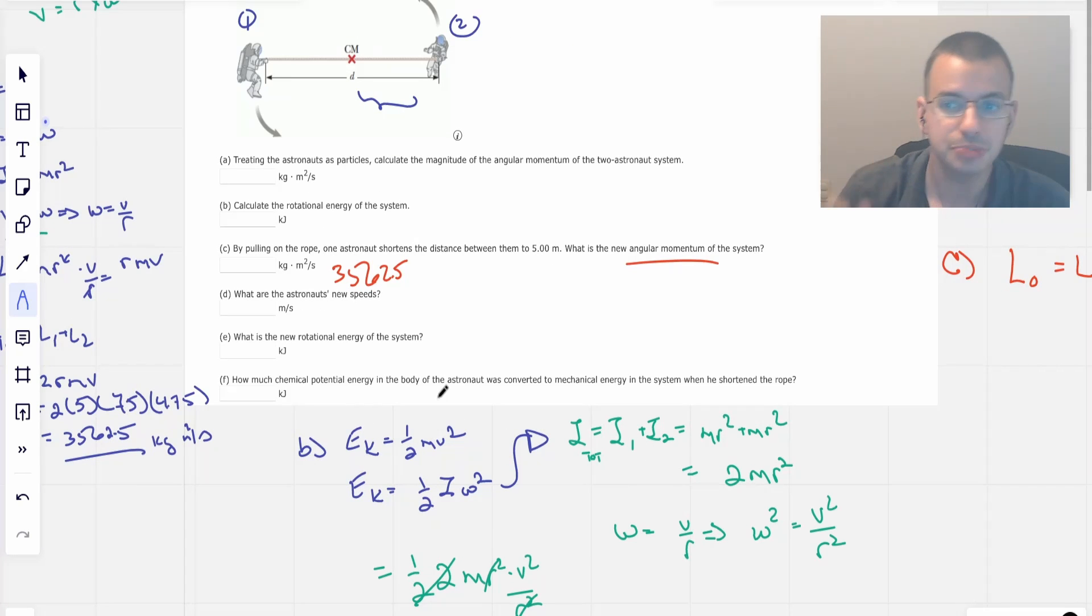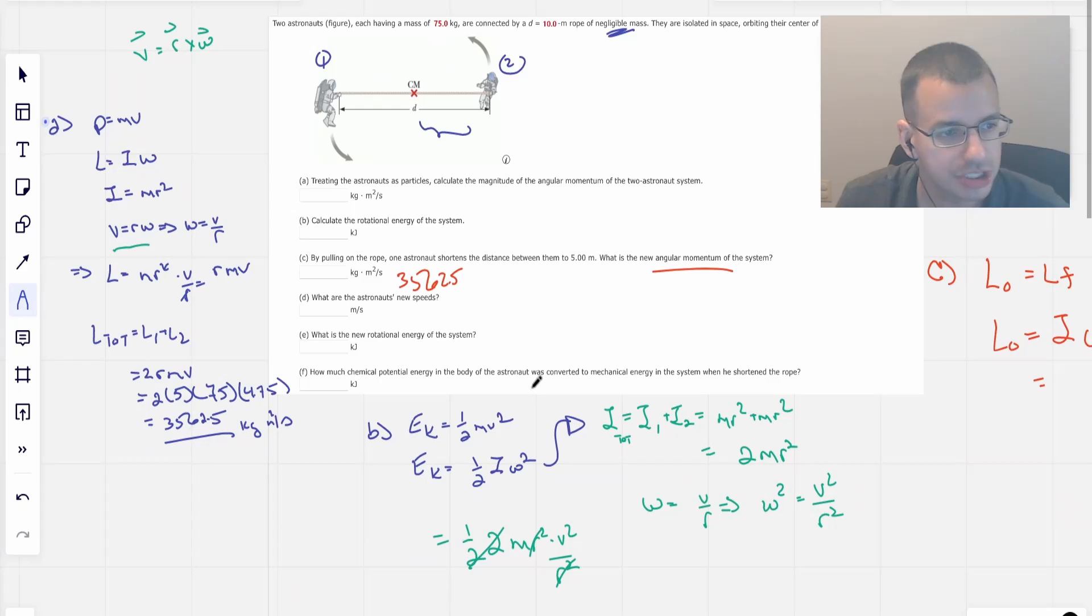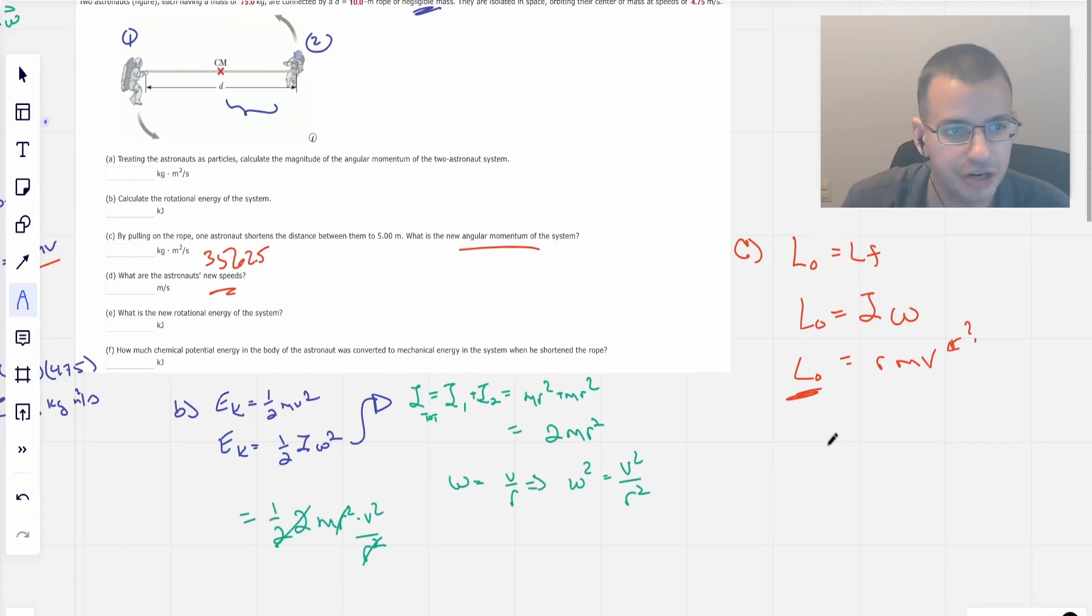What are the astronaut's new speeds? Now this is going to change. So we have angular momentum. And another way of defining angular momentum is I omega, which as we discussed earlier is going to be the same as RMV. So to find the new speeds, we already know the initial angular momentum and we know all the other data.